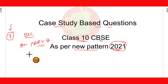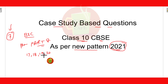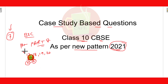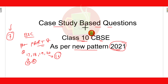In this examination, question numbers 17, 18, 19, and 20 will be based on case study questions. Each question will have 5 sub-questions and the student has to attempt any 4 out of the 5. Each question carries 4 marks, so for 4 questions there will be 16 marks total allotted to case study based questions.